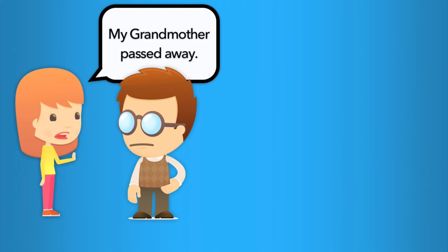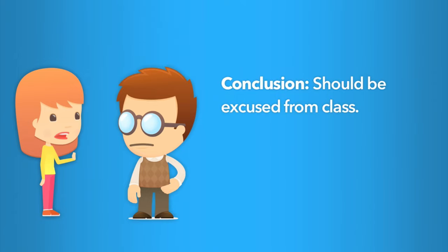For example, a student tells her instructor, my grandmother died and I had to miss class to go to her funeral. The issue or problem at hand is whether the student should be excused from class. Now, the student believes the conclusion is yes and offers a reason, attending her grandmother's funeral, to defend that conclusion. That reason is the argument's premise. The instructor can then evaluate whether she has offered a good argument or not.